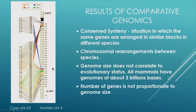So chromosomal rearrangements among species can be identified. We know that genome size does not correlate very well with evolutionary status. All mammals have genomes of about the same size, about 3 billion base pairs, but some frogs have genomes that are 30 times larger than the human genome.